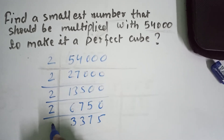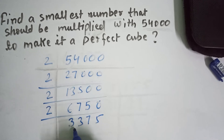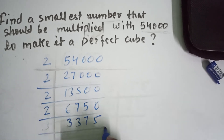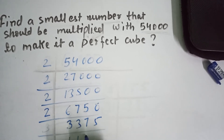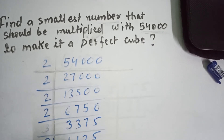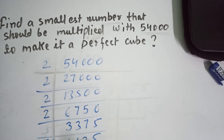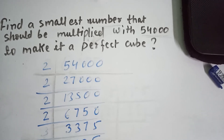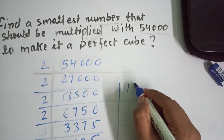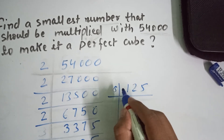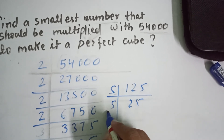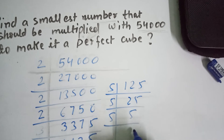Now we need to use 3. So 6,750 can be divided by 3, giving us 2,250. We divide by 3 again to get 750, then divide by 3 once more to get 125. Now we have to use 5. Dividing 125 by 5 gives 25, then 5, then 1. So this is our prime factorization.